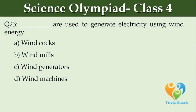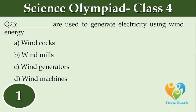Dash are used to generate electricity using wind energy. Option A: Wind cocks. Option B: Windmills. Option C: Wind generators. Option D: Wind machines.